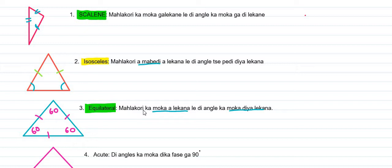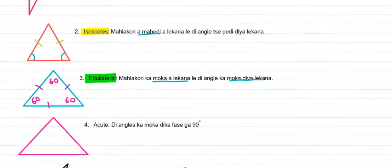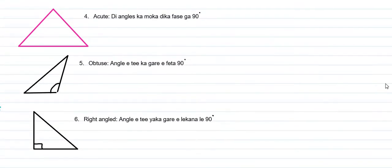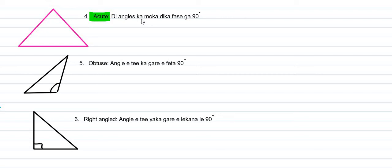If you are using the isosceles, the equilateral, or the scalene, you can see the triangle here. The triangle can be an acute triangle — the angle is less than 90 degrees. All angles are already less than 90 degrees, which makes an acute triangle, like an equilateral triangle where the angles are 60-60-60, all less than 90.